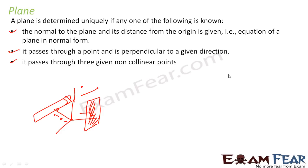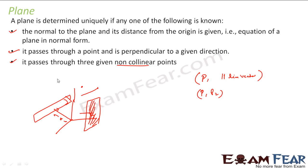For example, in case of a line, we say that if the line passes through a point and it is parallel to a line vector, I can tell the equation of the line. If it passes through points p1 and p2, I can tell the equation of the line. Similarly, in case of a plane, if it passes through three points, we can tell the equation of the plane. If it passes through a point and is perpendicular to a given direction, we can tell the equation of the plane. And if we know the normal and the distance of this normal from the origin, we can tell the equation of the plane.